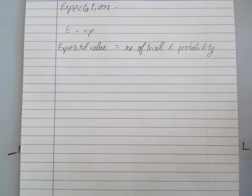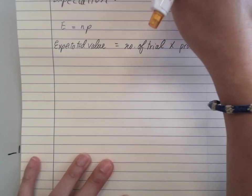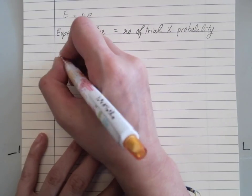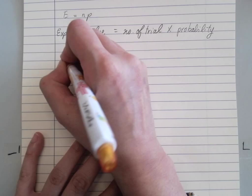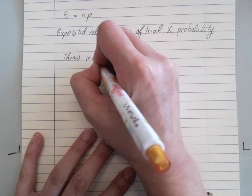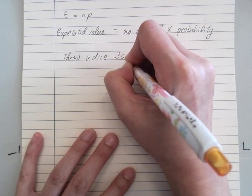For example, what will I expect if I throw a dice 300 times?